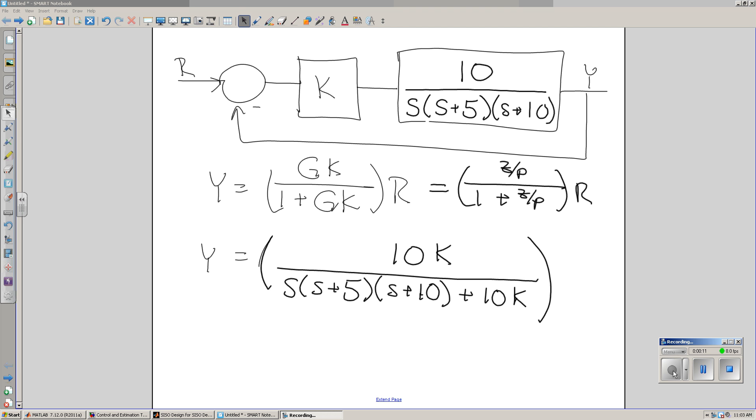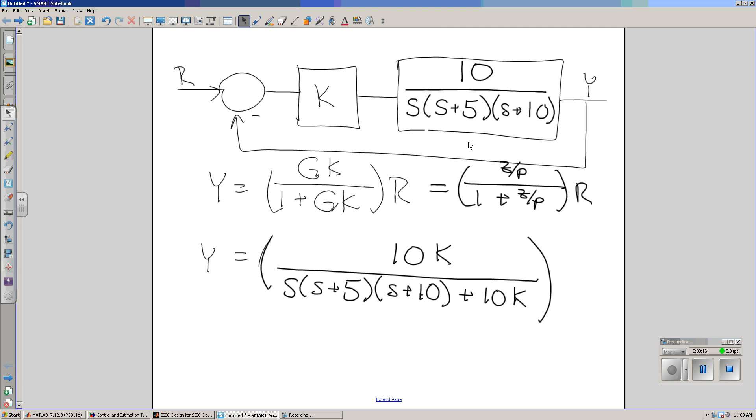For example, suppose I've got a cubic, a plant right here, with a feedback gain k.